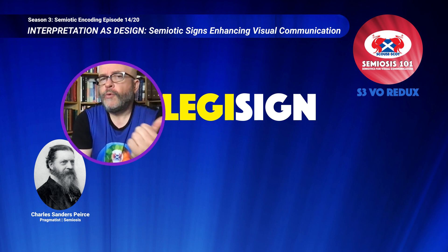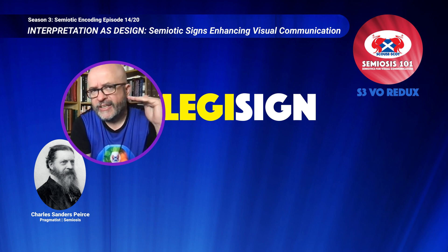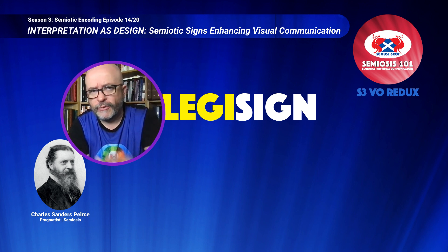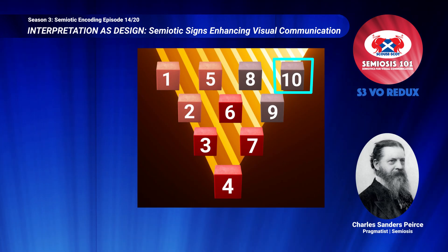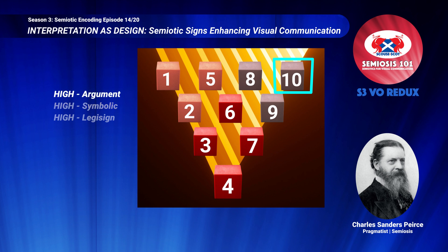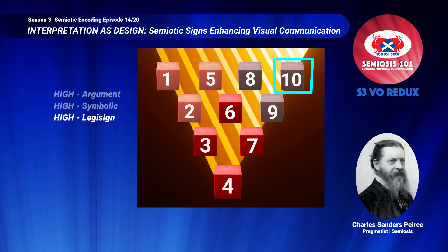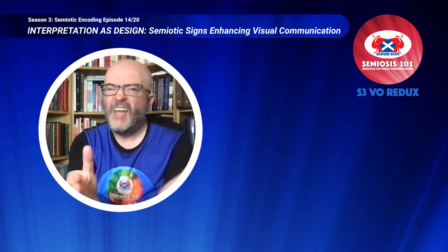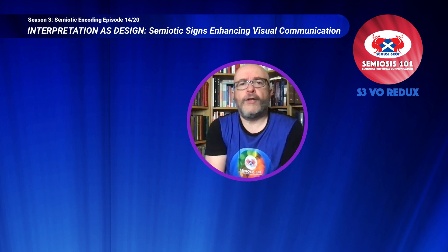Peirce uses familiar terms such as law and argument when trying to name what semiotically and perceptually happens at the point of interpretation. He is making a specific philosophical and logical point, but his terminology is nothing more than obtuse to the creative. We will look at this highest level of triadic sign action in the same way we explored the lowest in episode 3.5. The highest of Peirce's 10 semiotic sign classifications utilizes symbolic representation, arguments, and is a legisign. We already know symbolic representation employs visual generalities. We know an argument in Peircean terms is nothing more than a general agreement. A legisign is a general expected way of experiencing the semiotic visual communication.